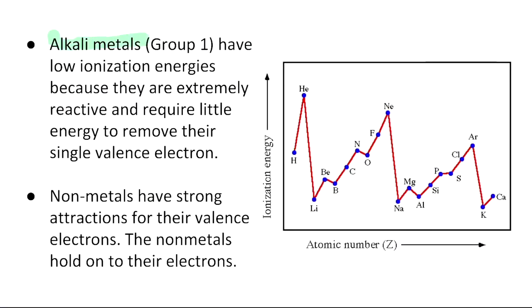So alkali metals, group one of the periodic table, they have the low ionization energy level because they are considered extremely reactive, and they require very little energy to remove that single valence electron.